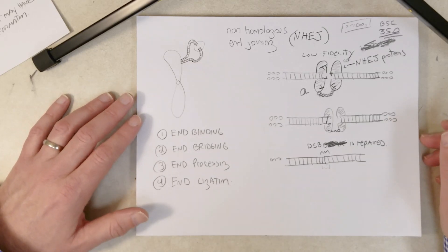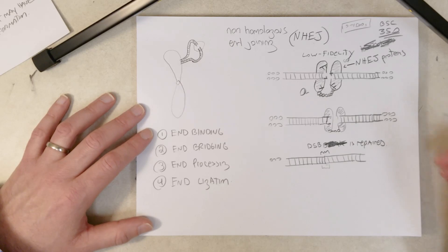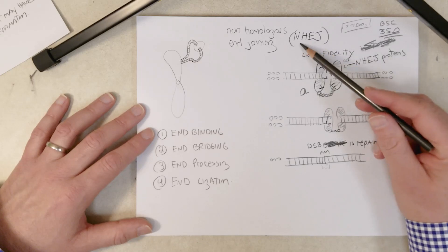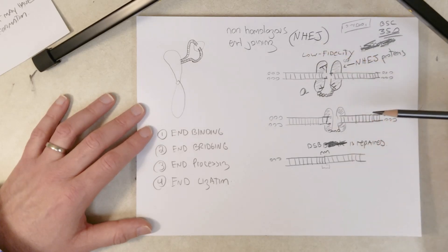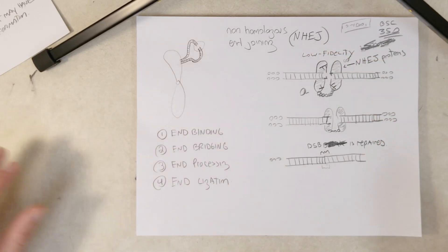And when HRR cannot be used, NHEJ can be used. HRR is the high fidelity process and NHEJ is the low fidelity process. Okay, well I'll see you in the next video. That's it for DNA repair and mutations. We are moving on to gene regulation in prokaryotes.